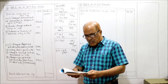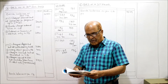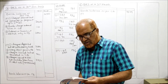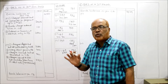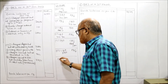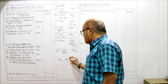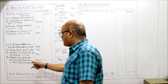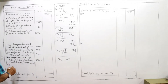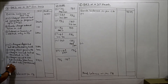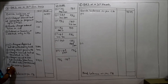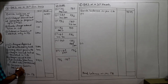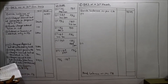Ninth item: the pass book showed a debit of rupees 175 for insurance premium. The banker paid the insurance premium, so the pass book balance decreases. The cash book shows more balance since this was not recorded there. Our starting point, the cash book, shows more balance, so we deduct. Less: insurance premium debited in pass book only — rupees 175.